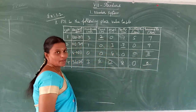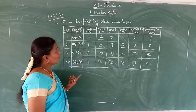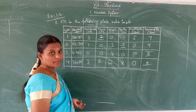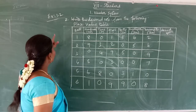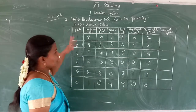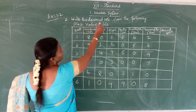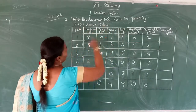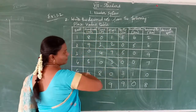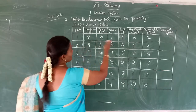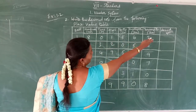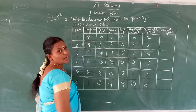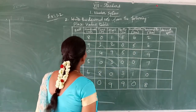Listen children. Exercise 1.2, second sum: write the decimal numbers from the following place value table. This is given in the place value table. You have to find out the decimal form — the decimal number.